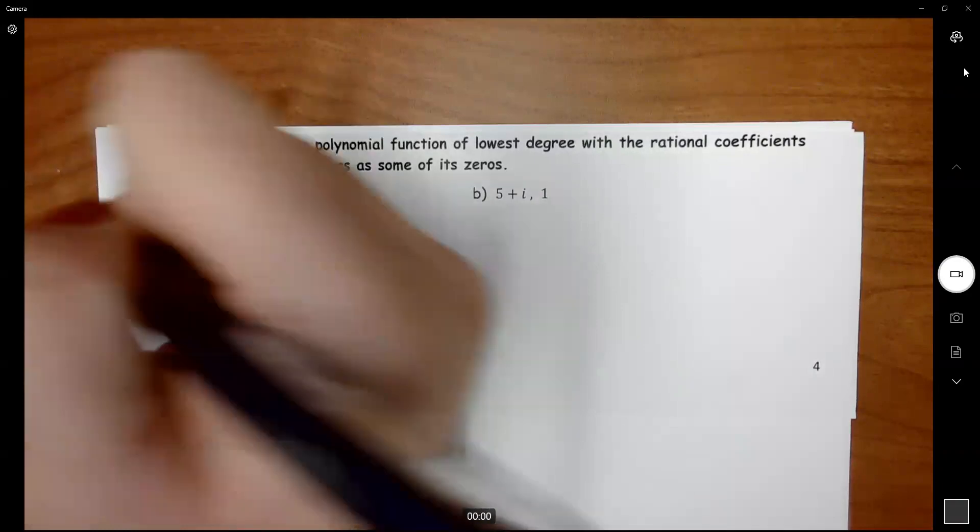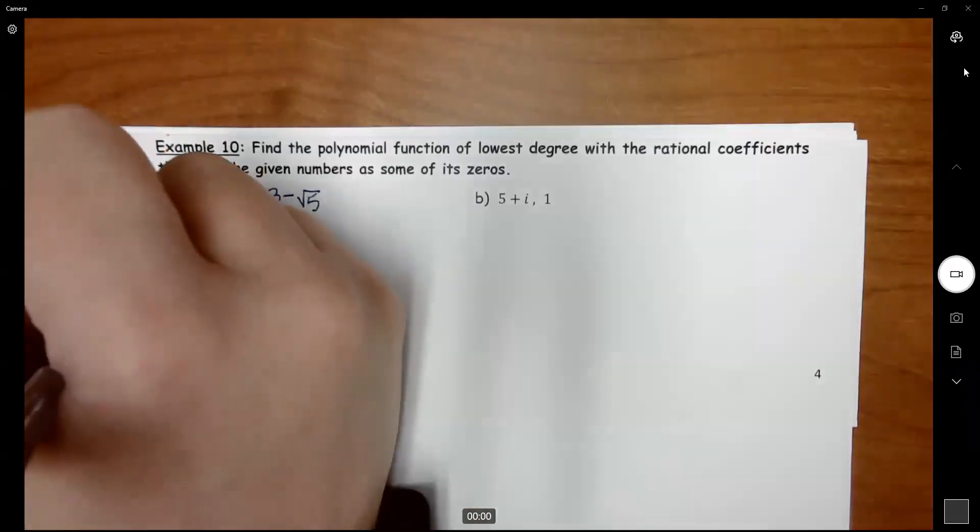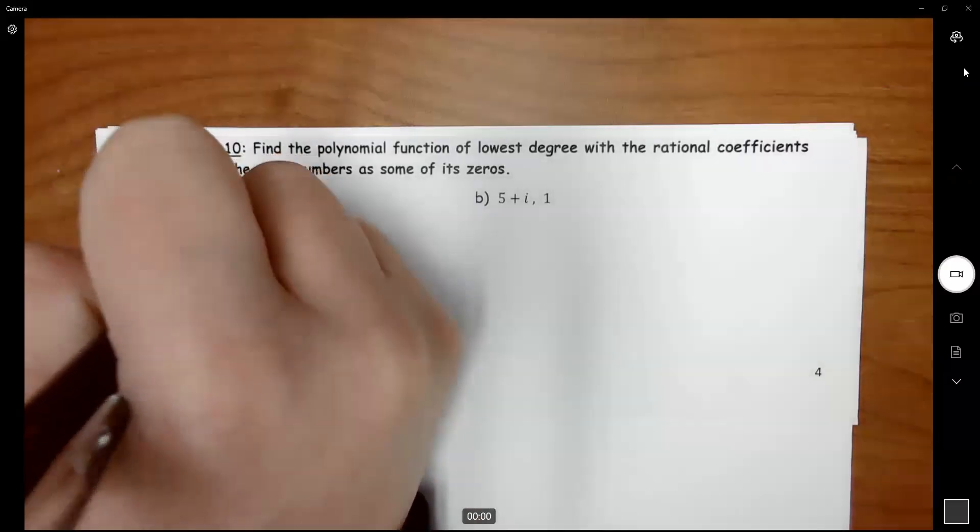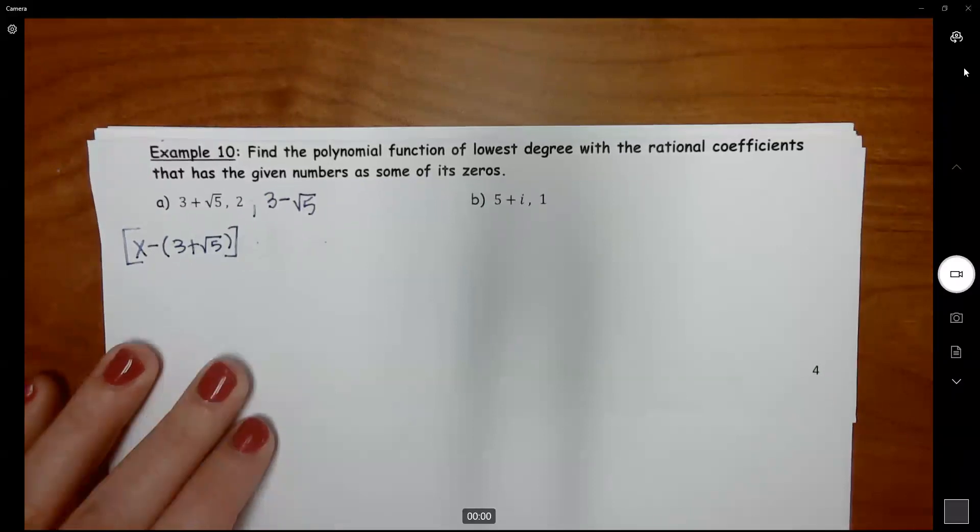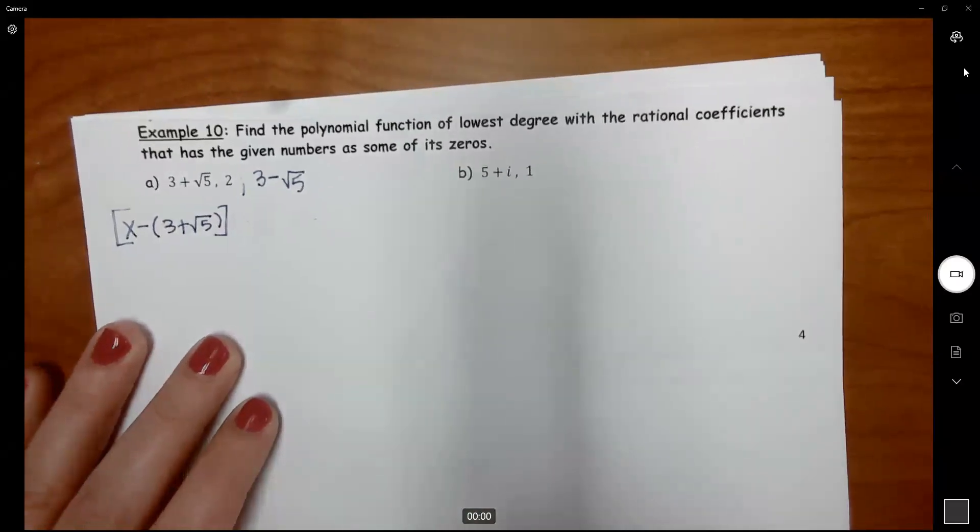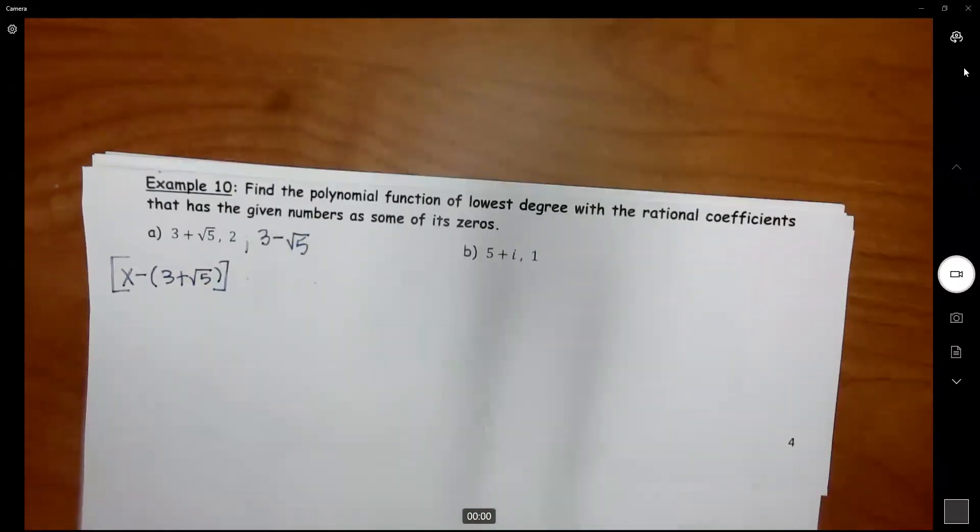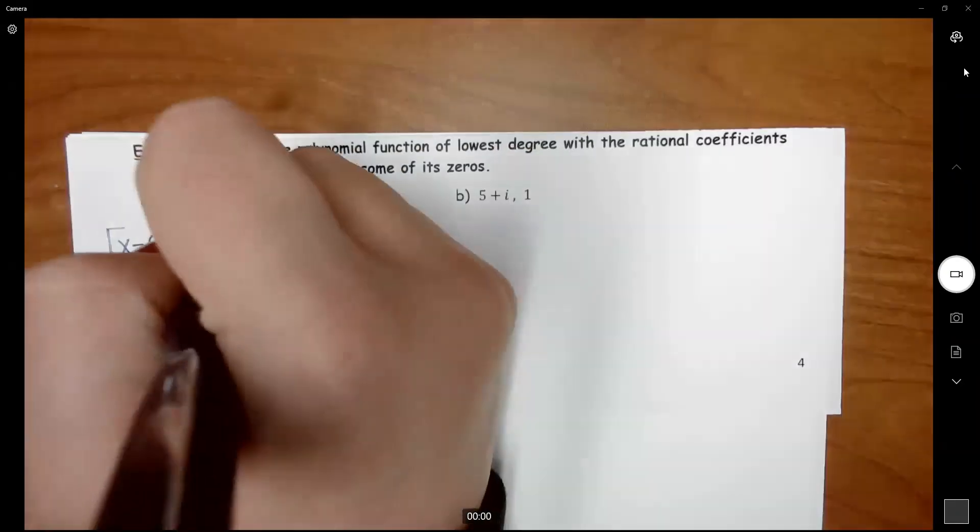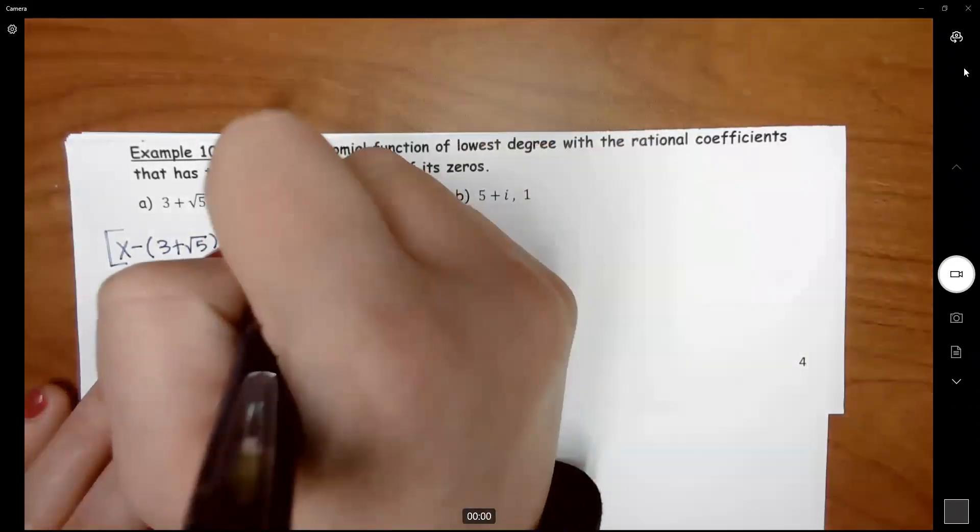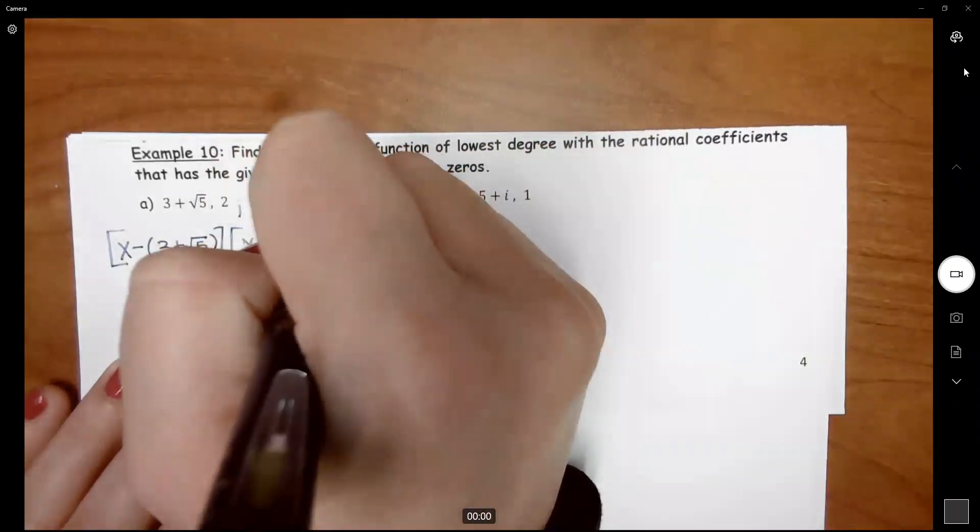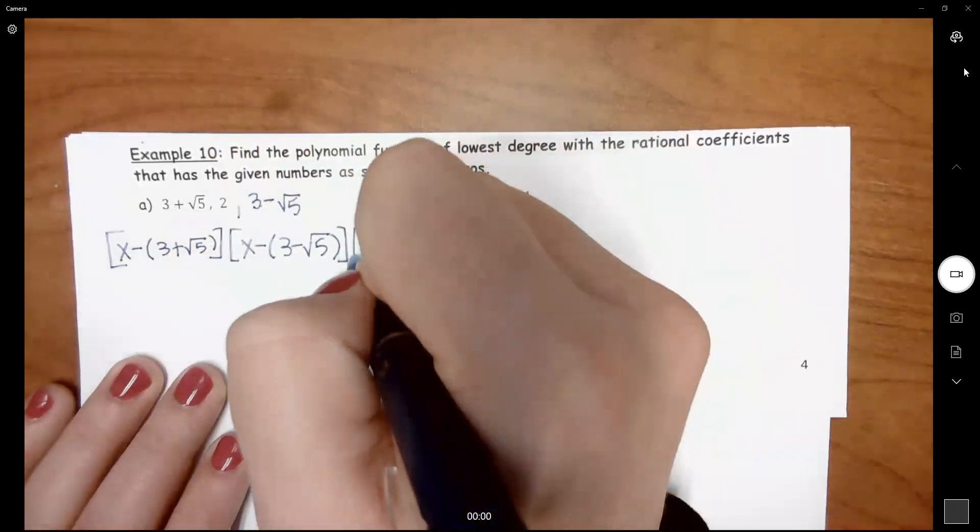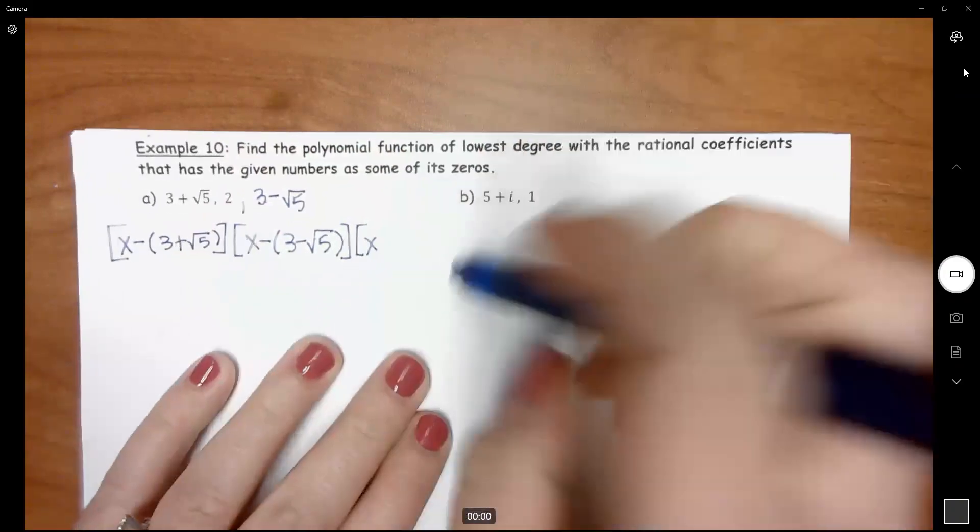So in factored form, this first one here would be X minus 3 plus square root 5. I'm going to go ahead and put this one with this one. So we've got X minus again, 3 minus square root 5, and then we have X minus 2.